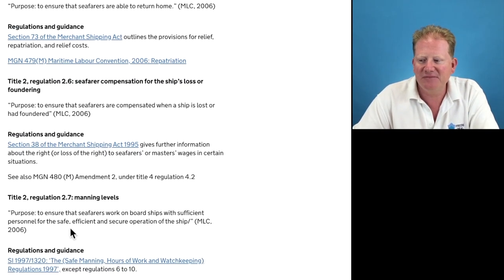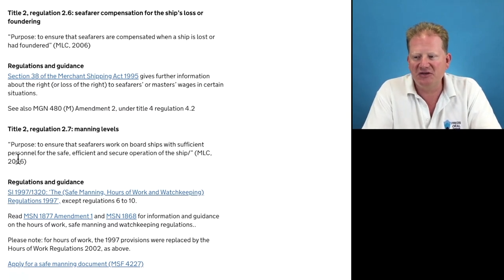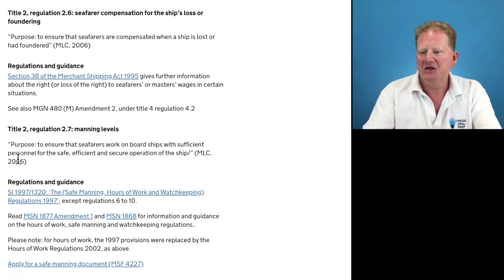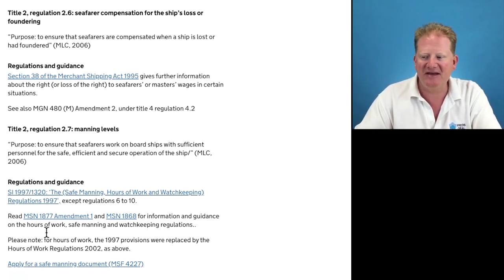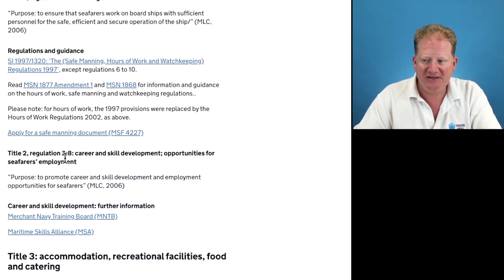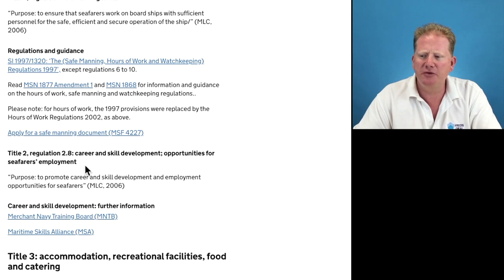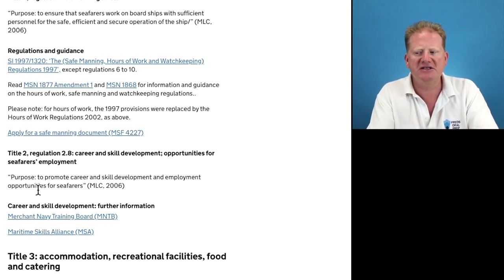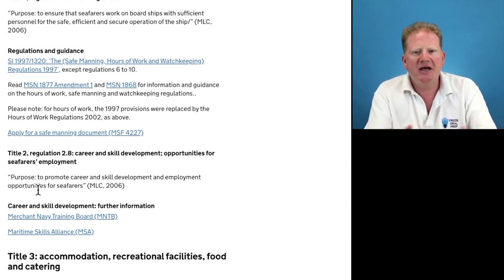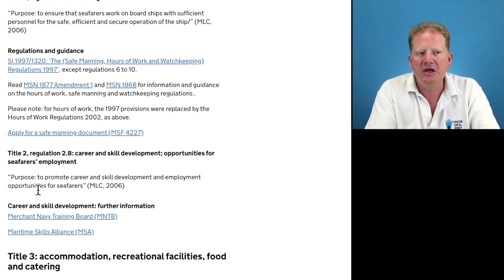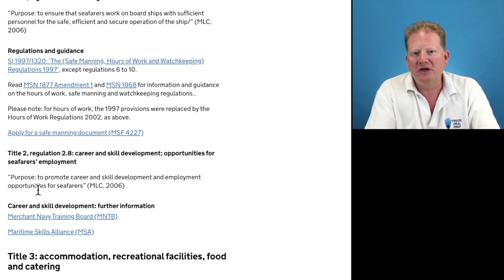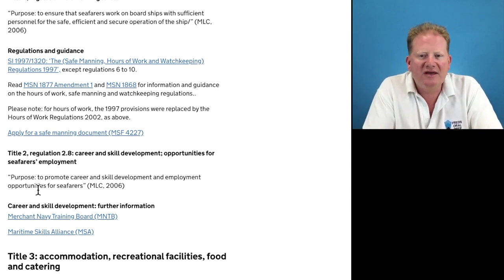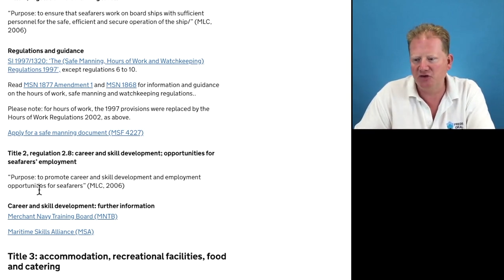MGN 480 — manning levels. The purpose is to ensure sufficient personnel for the safe, efficient and secure operation of the ship. We've talked about safe manning. Hours of work, rest: MSN 1877. Safe manning documents. Regulation 2.8: career and skill development opportunities for seafarers — the purpose is to promote career and skill development and employment opportunities. That's training, isn't it? Training younger crew, training older crew to become captains, interior staff to become chief stewardesses, sommeliers, wine courses, medical training. We can definitely have career and skill development enhanced on some of the super yachts.